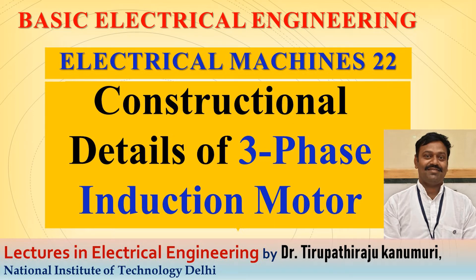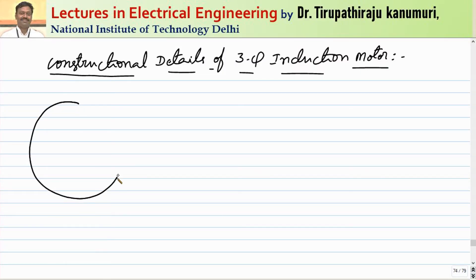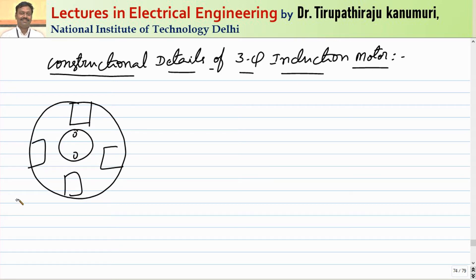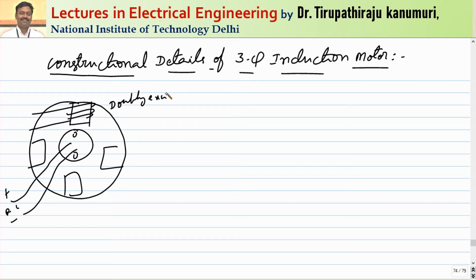Today we are going to discuss the constructional details of a three-phase induction motor. We have already discussed the DC machine, where there are fluxes produced by two fields — the poles on the stator and the armature on the rotor. The DC supply is given to both, making it a doubly-excited device. The interaction of the stator and armature fluxes produces the required torque to rotate the rotor.